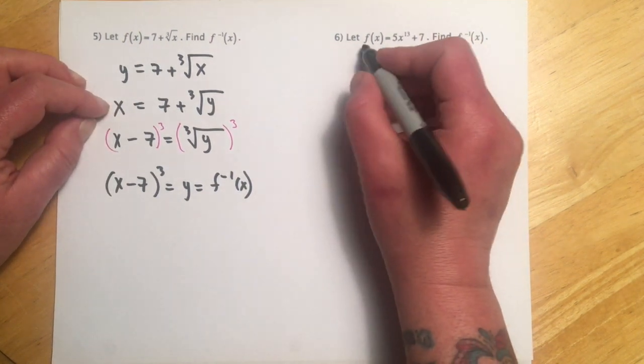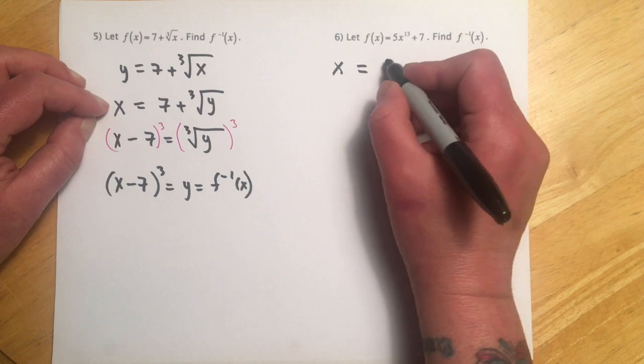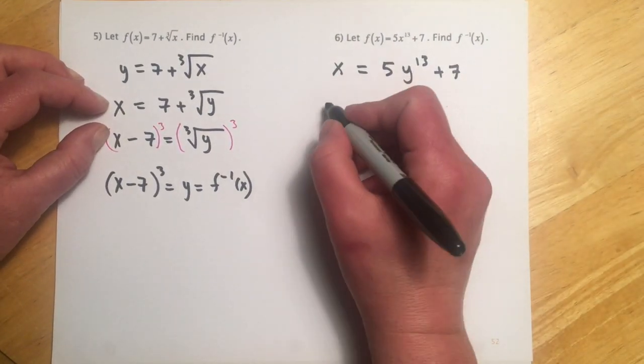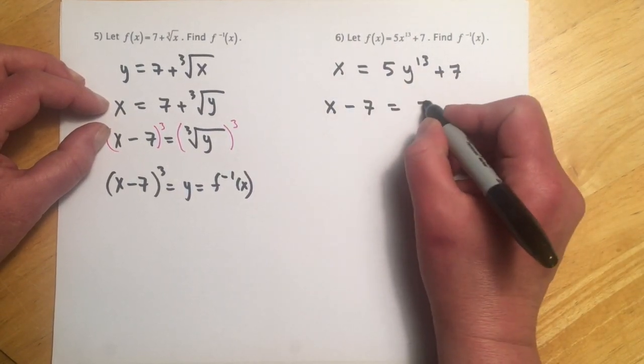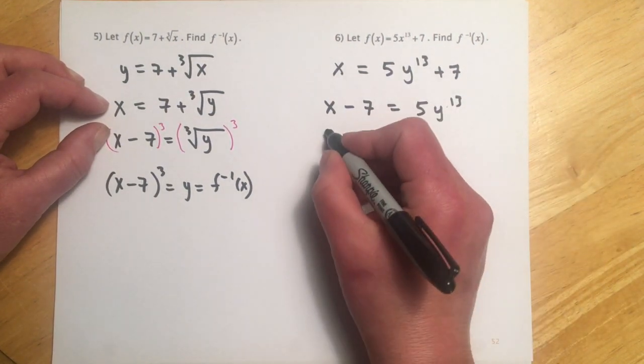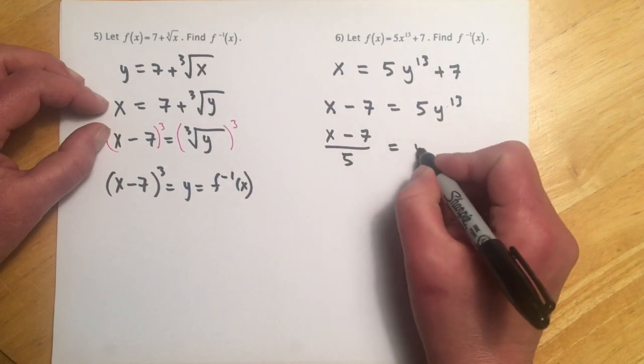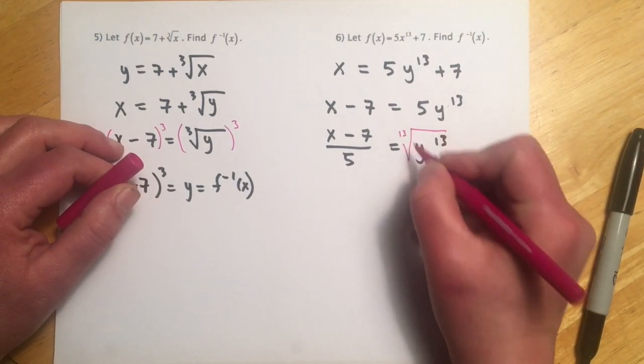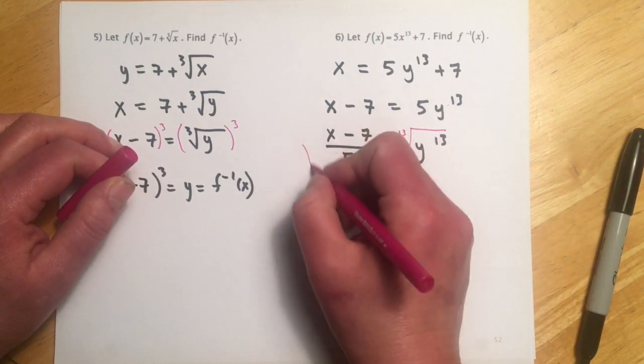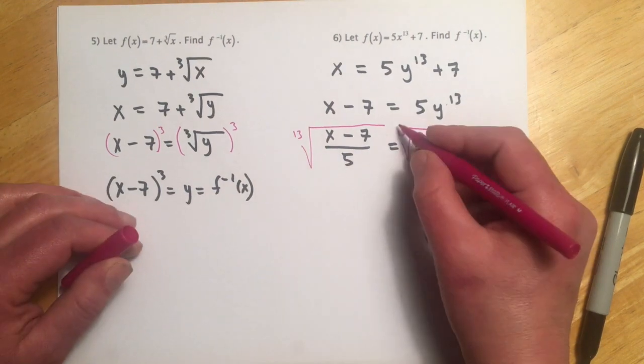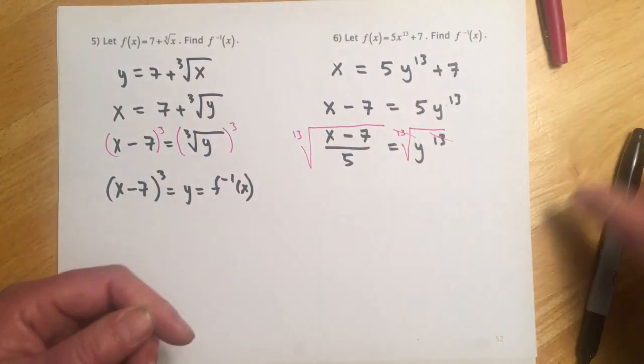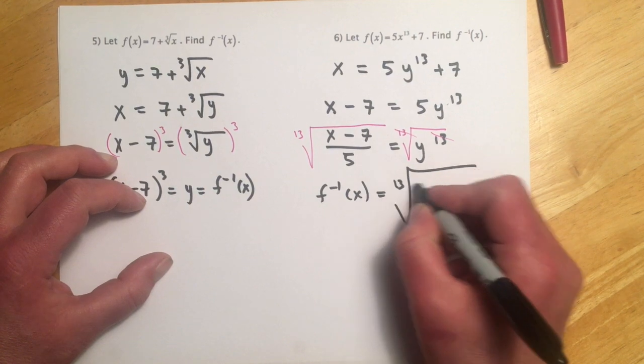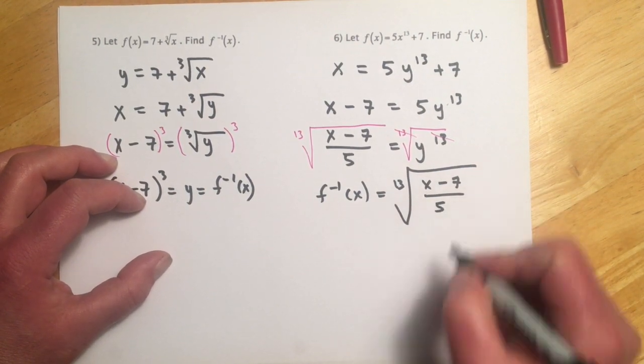For this one, I'll just skip straight to the, I'm going to call this y, and I'm flipping it to x equals 5y to the 13th plus 7. So I'll scoot the 7 over, and I'll divide both sides by 5, and then the trick to getting rid of the y to the 13th is to just take the 13th root, because if it was y squared, we'd square root both sides. So we just need the same root as we do power, and then we cancel those, and then what's left will be our inverse. So f inverse x equals 13th root x minus 7 over 5.